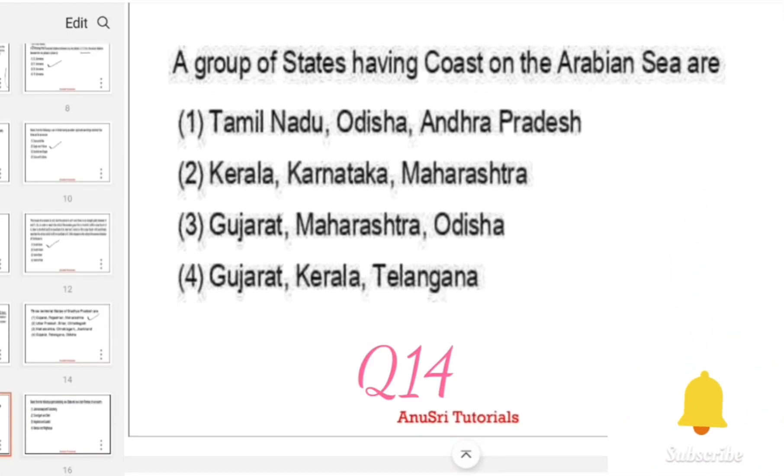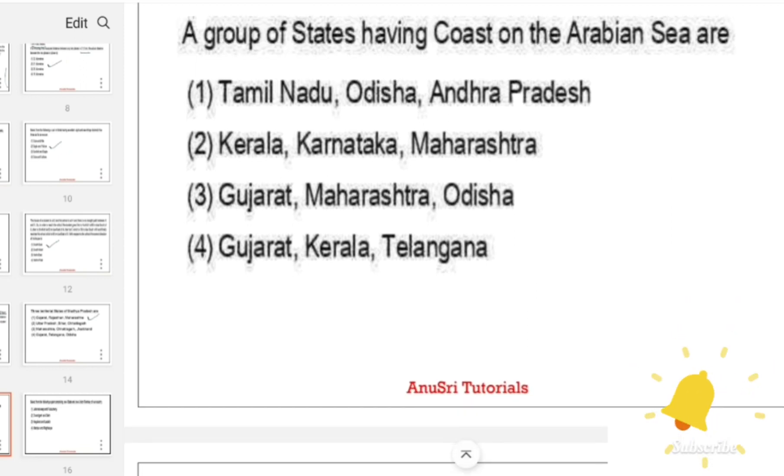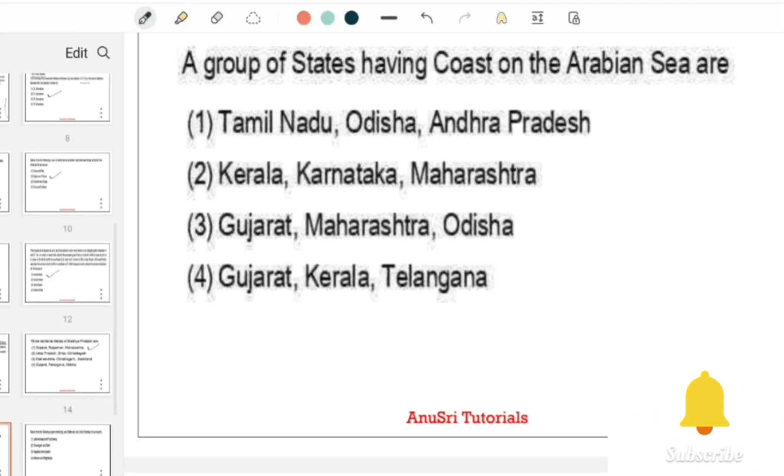A group of states having coast on the Arabian Sea are: option 1 Tamil Nadu, Odisha, Andhra Pradesh; option 2 Kerala, Karnataka, Maharashtra; option 3 Gujarat, Maharashtra, Odisha; option 4 Gujarat, Kerala, Telangana. Here Gujarat is one of them, but there is also a group of states that are common: Kerala, Karnataka, Maharashtra is the correct answer.